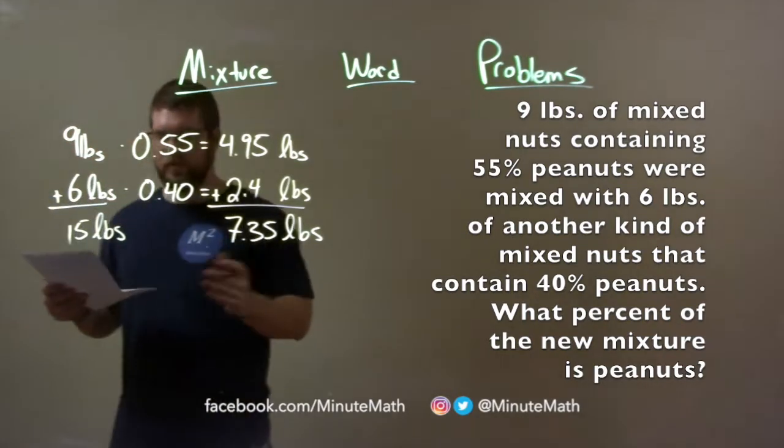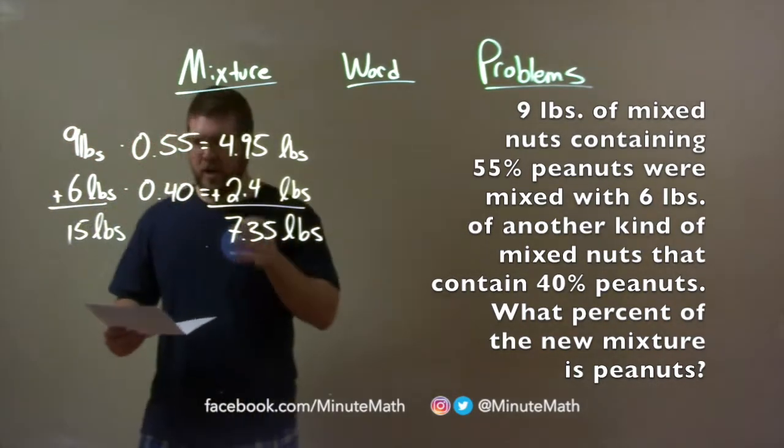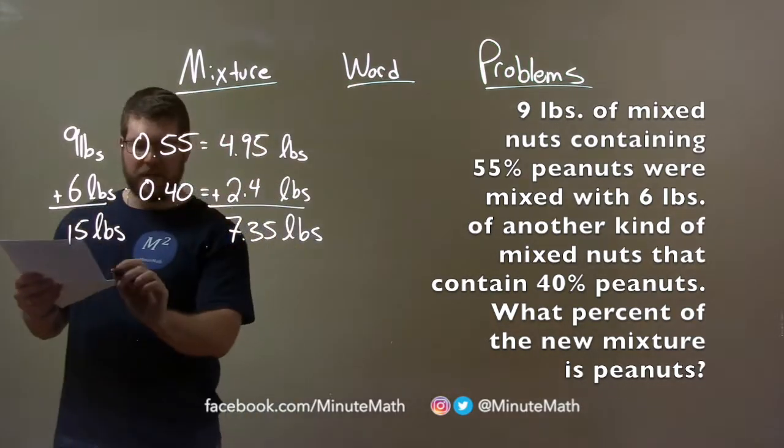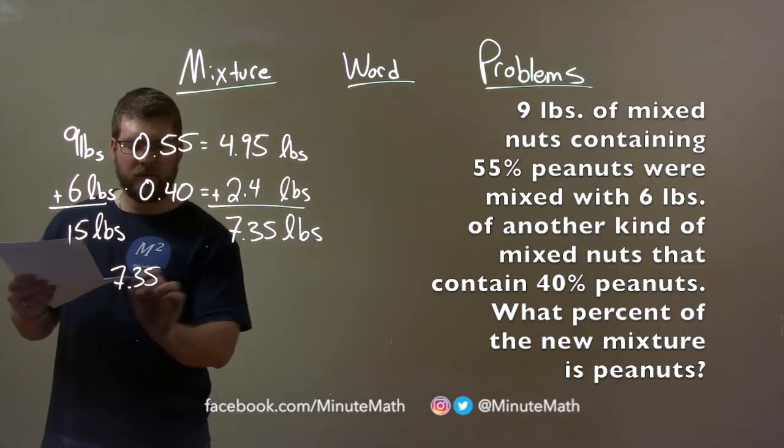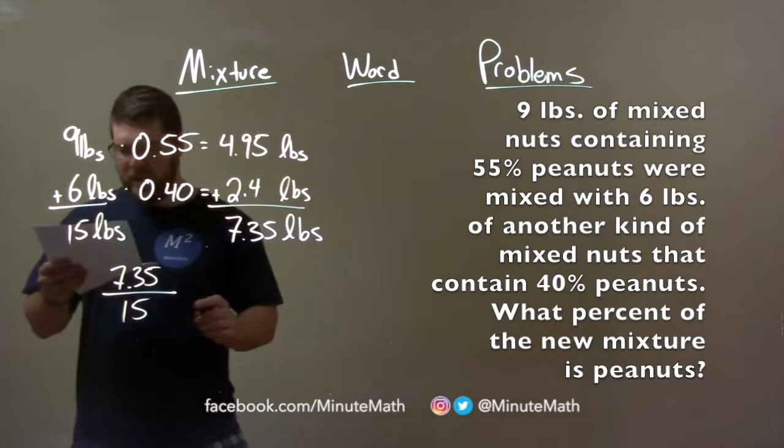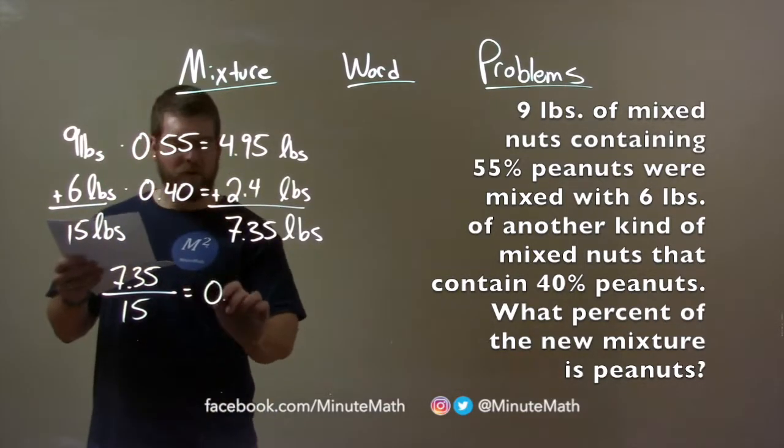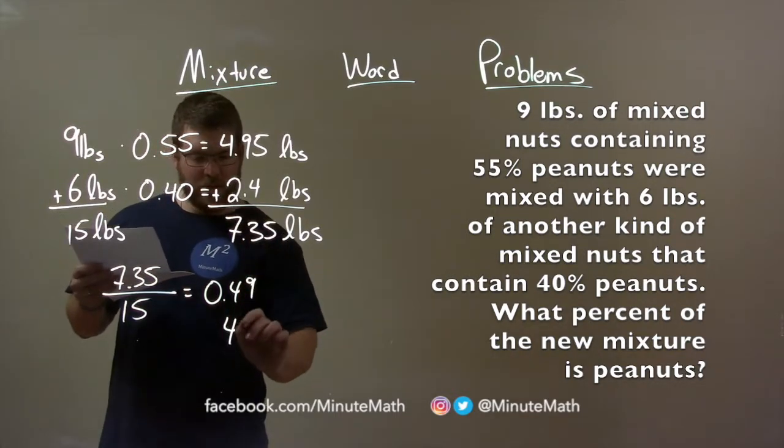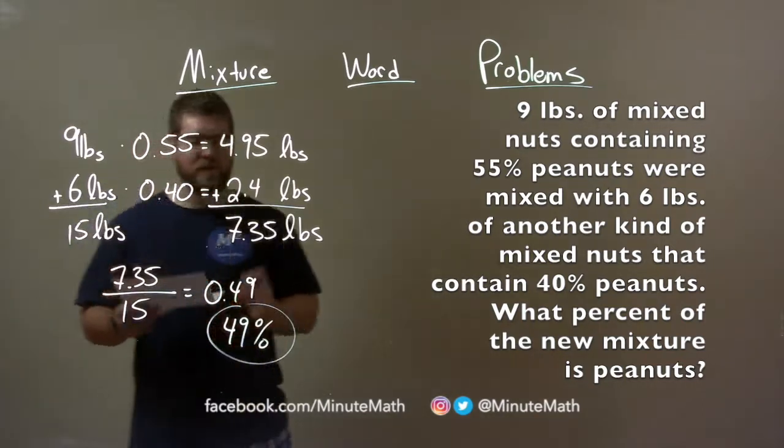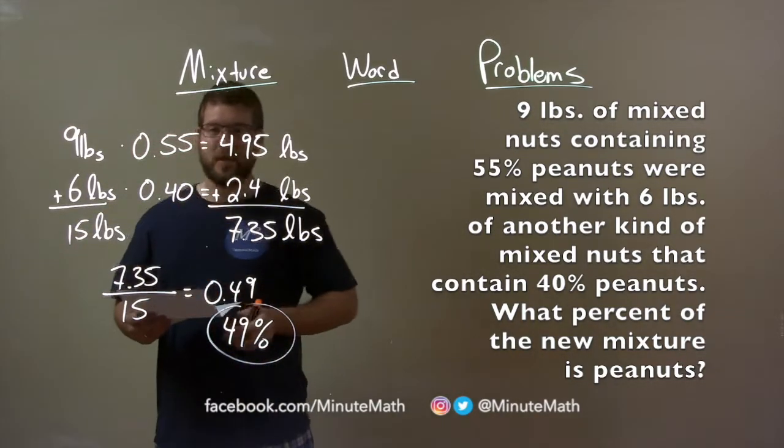And so combining these two to make a fraction, we want to see what percent of the final mixture is peanuts. So we take 7.35, divide that by 15, and we get a decimal of 0.49, which comes out to be 49%. And so our final mixture contains 49% peanuts.